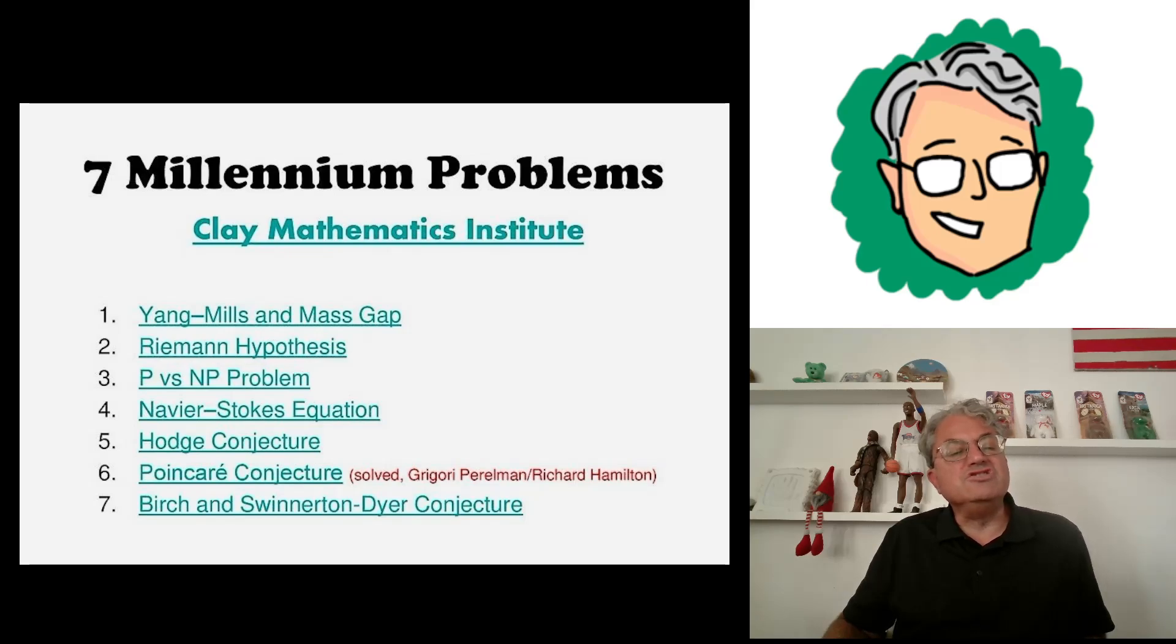Then there's the Navier-Stokes equation. This is an equation involving fluid flow. It's a complicated second order differential equation. Basically what this problem is saying is that there do exist nice solutions to Navier-Stokes equations for all possible initial conditions. This isn't known whether this is true or not.